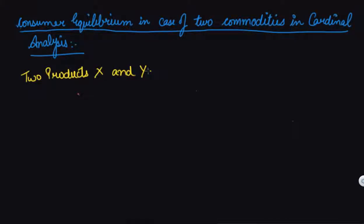Hello class, today we will be studying consumer equilibrium in case of two commodities in cardinal analysis. I told you that you can find consumer equilibrium in two analyses: number one is cardinal analysis, number two is ordinal analysis. We did consumer equilibrium in case of one commodity in our previous class; in this class we will be doing consumer equilibrium in case of two commodities in cardinal analysis.